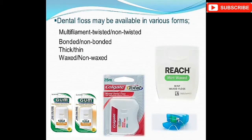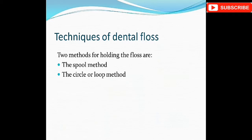Dental floss is available in many forms: multifilament, twisted, non-twisted, bonded, non-bonded, thick, thin, waxed, and non-waxed. When flossing, strips or rope-like floss is engaged in the interproximal areas to wipe out calculus and plaque. Many brands such as Colgate Total, Reach, and GUM offer dental floss. The techniques include the spool method and the circle or loop method.